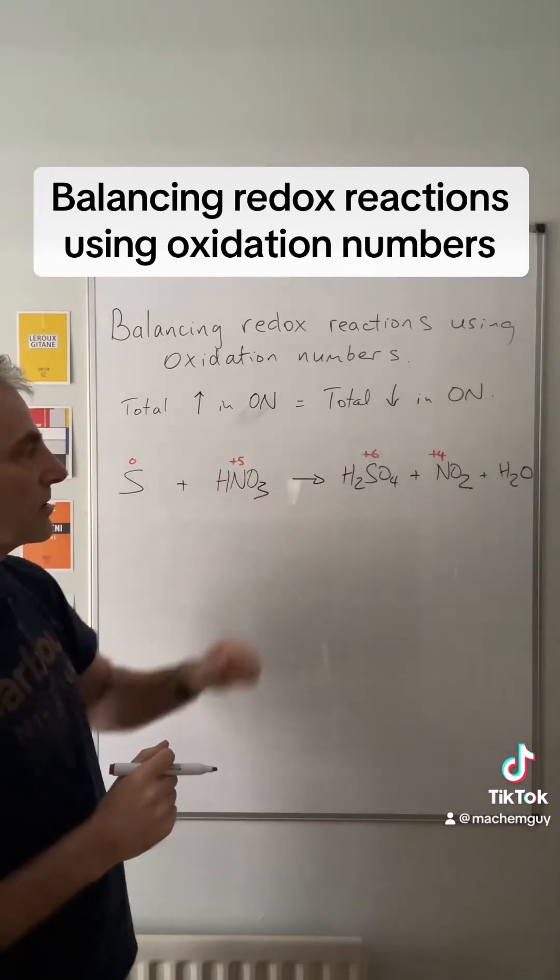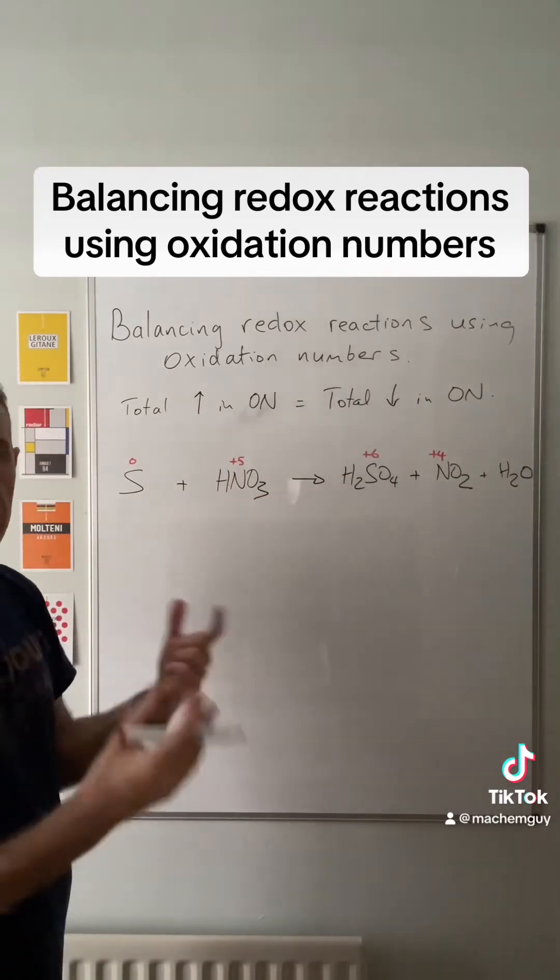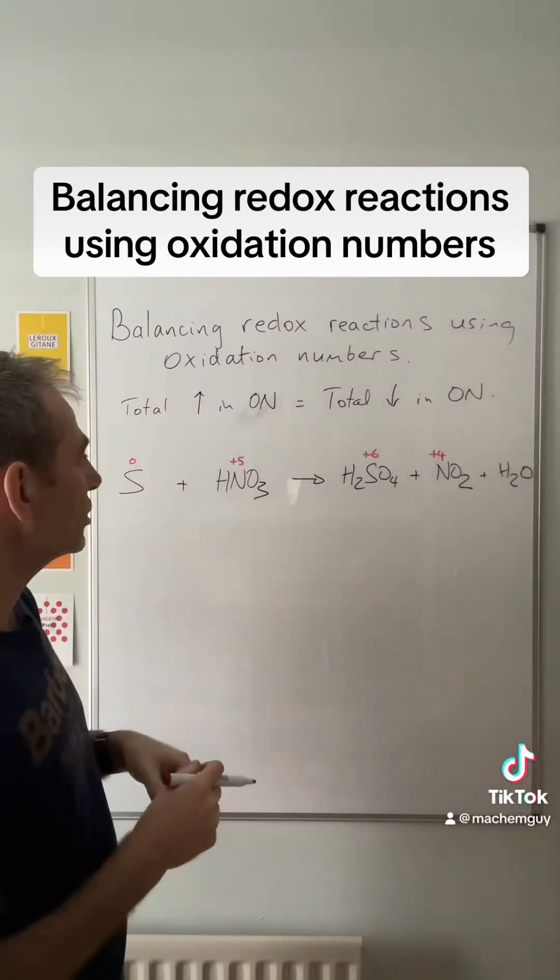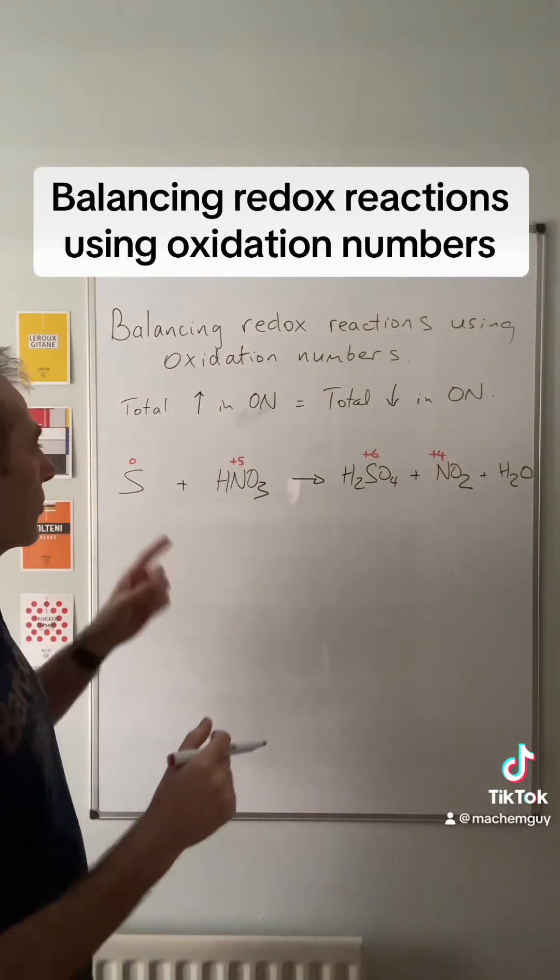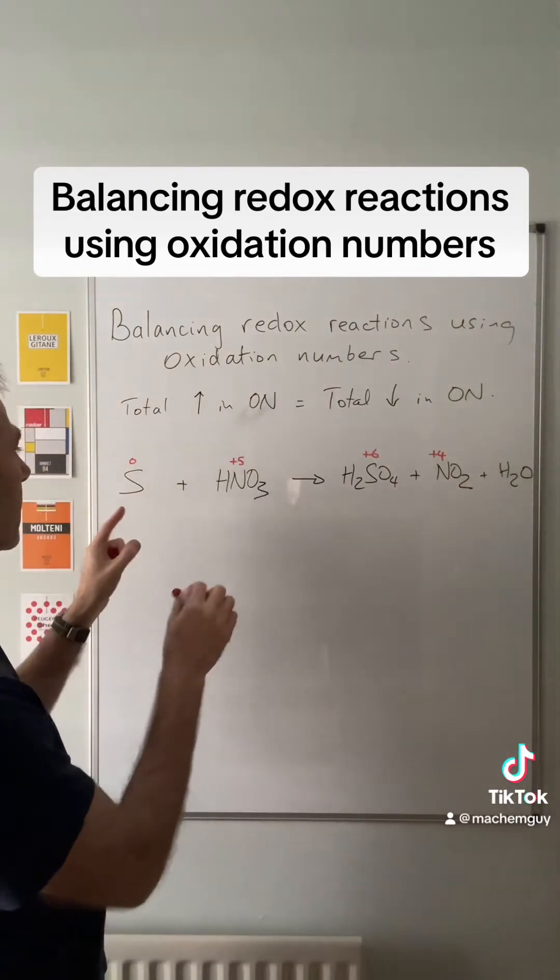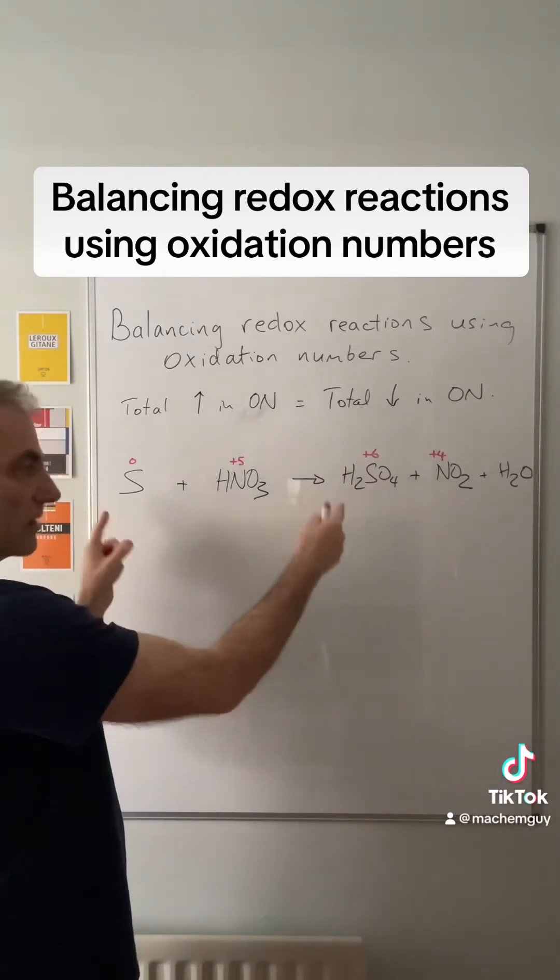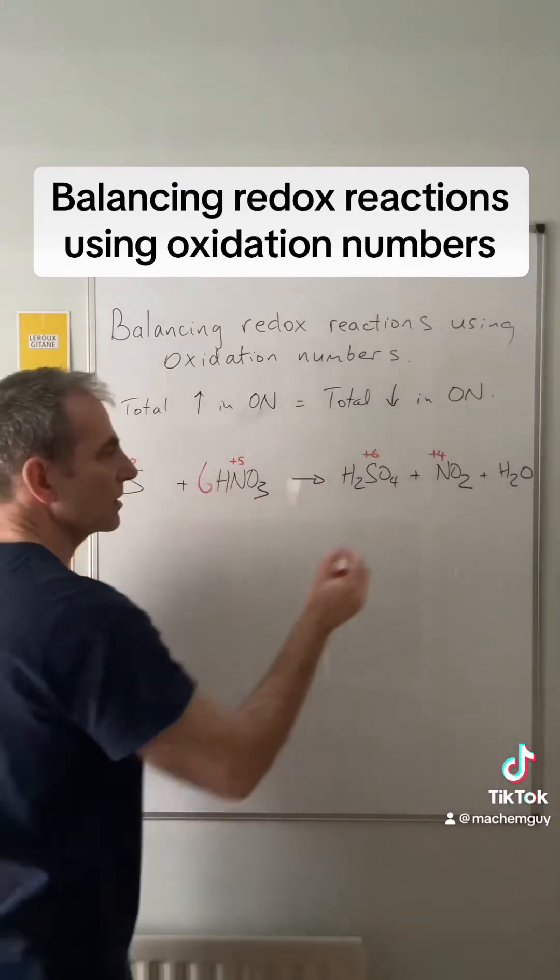If the total increase in oxidation number equals the total decrease, we can't have a change of six and a change of one. So what we need to do is get the change of one to match the six, so we put sixes in front of those.